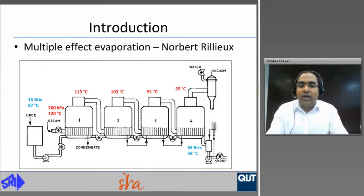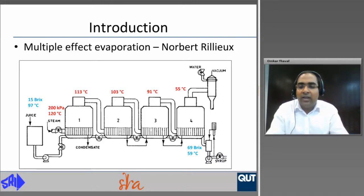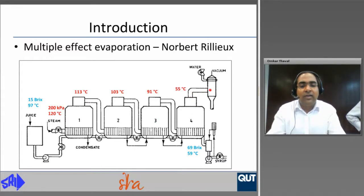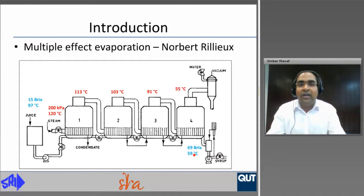Multiple effect evaporation was developed by Norbert Rileks in the Louisiana sugar industry to achieve efficient usage of steam. The figure shows a quadruple effect where juice at 15 brix and 97 degrees Celsius is brought into the first effect and heated with process steam at 120 degrees Celsius. Using the graduated pressure difference between the process steam and vacuum in the final effect, vapour in the first effect heats the juice in the second effect and so on, until the final effect where vapours are condensed in the barometric condenser. The syrup leaving the final effect is at 69 brix and 59 degrees Celsius.